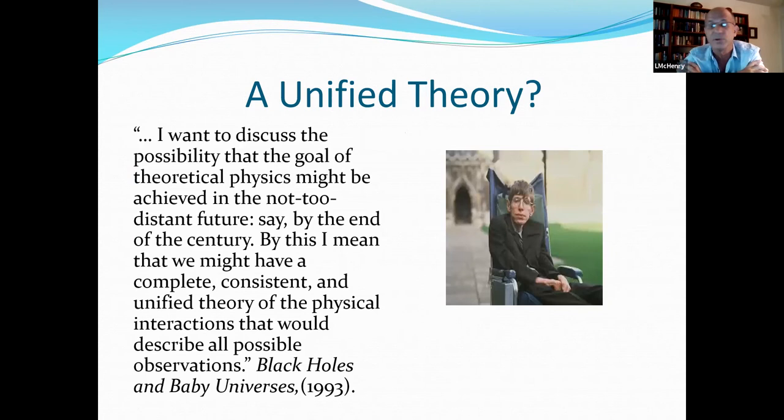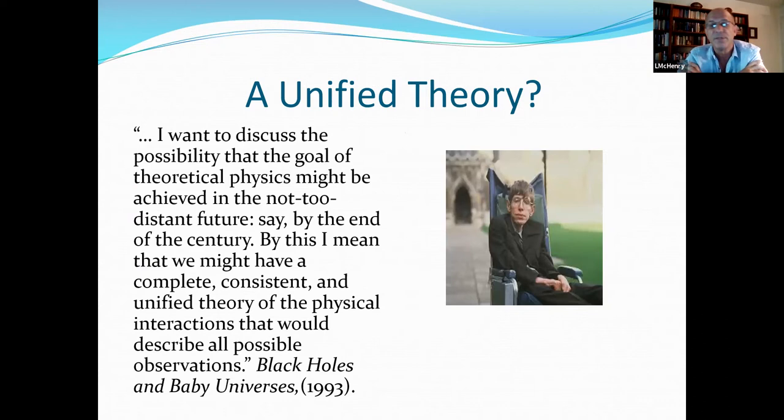So here's what Hawking said in Black Holes and Baby Universes. I want to discuss the possibility that the goal of theoretical physics might be achieved in the not-too-distant future, say by the end of this century. By this, I mean that we might have a complete, consistent, and unified theory of the physical interactions that would describe all possible observations. Okay, so it looks like he was a little bit too optimistic in terms of that prediction.